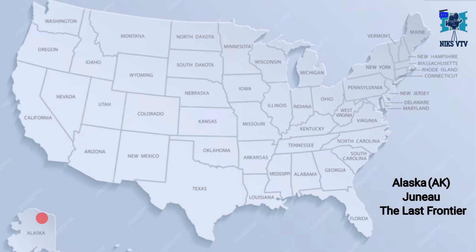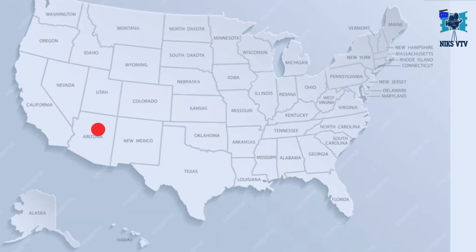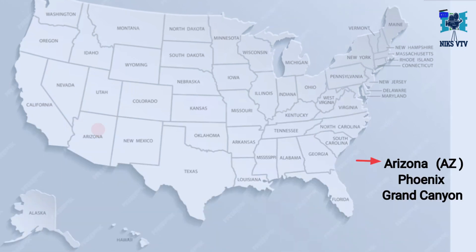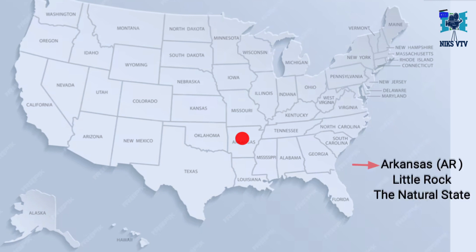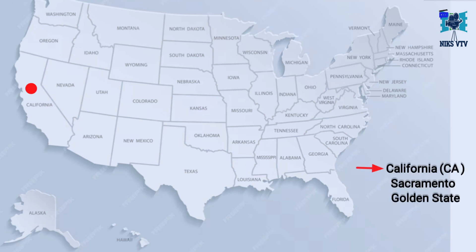Next state is Arizona, its abbreviation is AZ, its capital is Phoenix, its time zone is MST — that is Mountain Standard Time Zone — and its nickname is Grand Canyon State. Next state is Arkansas, abbreviation is AR, its capital is Little Rock, its time zone is CST, and its nickname is the Natural State.